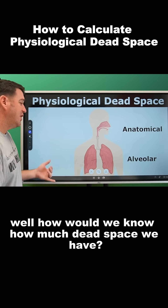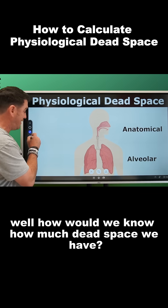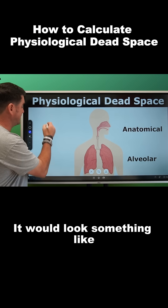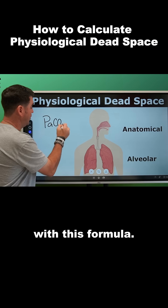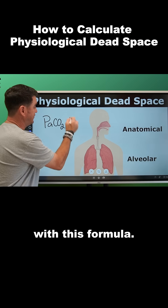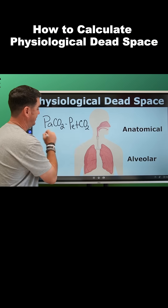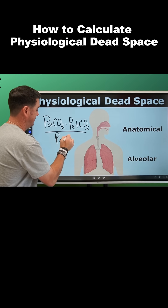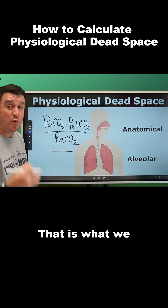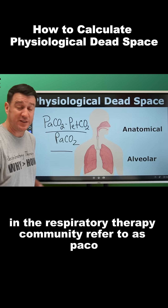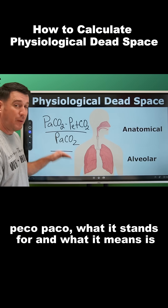If you're ever wondering how would we know how much dead space we have, it would look something like this — and you're probably all very familiar with this formula. That is what we in the respiratory therapy community refer to as Paco-Pico-Paco.